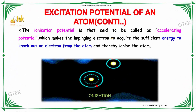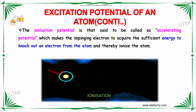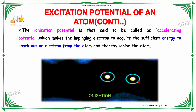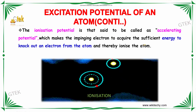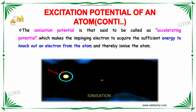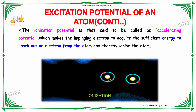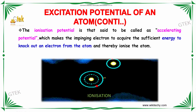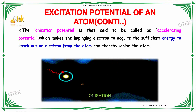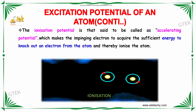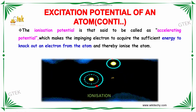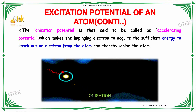The ionization potential is referred to as the accelerating potential, which makes the impinging electron acquire sufficient energy to knock out an electron from the atom and thereby ionize the atom. This is referred to as ionization. You are able to see the electrons hitting here — this is ionized, it's losing energy, and it's coming to the original state.